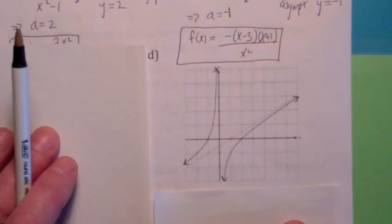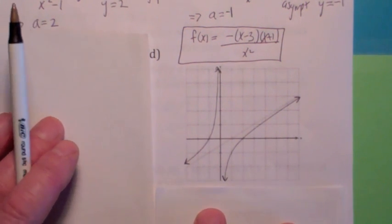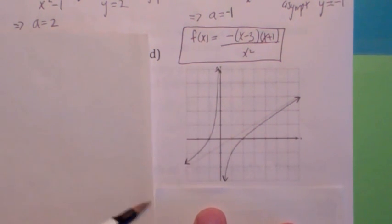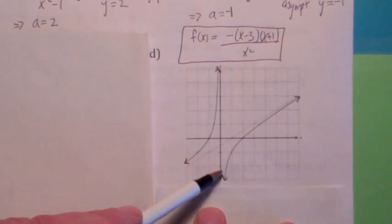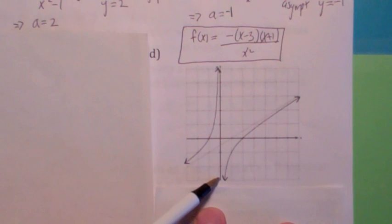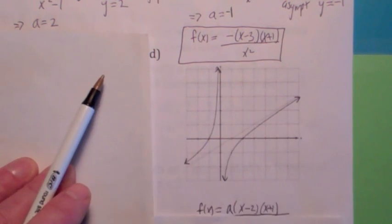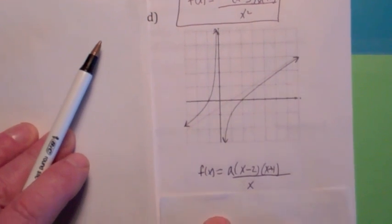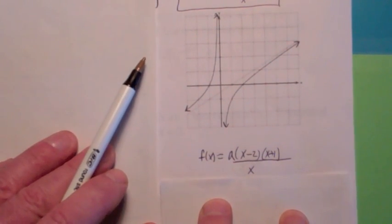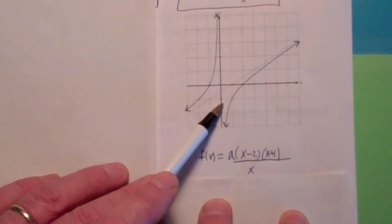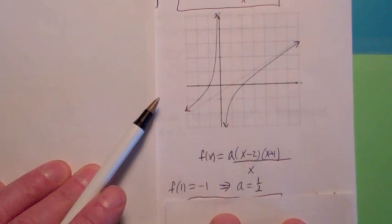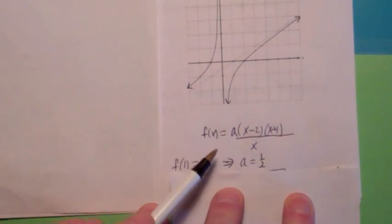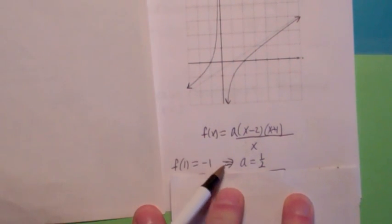This gets a little more challenging. It looks like we've got an oblique, or linear, asymptote. So the top has to have degree 1 more than the bottom. I'm looking at a vertical asymptote at 0 with odd multiplicity, probably 1, and x-intercepts at 2 and negative 1. This seems like a possible starting point. Now, how do you find a? It looks like the graph goes to the point where if you plug 1 in for x and negative 1 in for y — hit the pause button and check — you'll find a is 1 half.